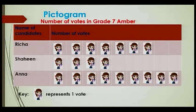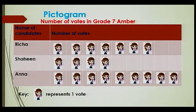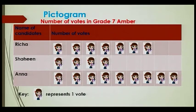My key here represents only one vote. So Richard had obtained seven votes, so I need to have seven such diagrams. Shaheen four votes, so four such diagrams. And Anna had obtained nine votes. So this is my pictogram.